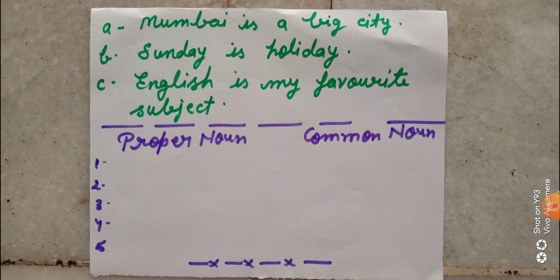One column for proper noun and one column for common noun. After that you will read out the sentences; the proper nouns go in the proper nouns column and the common nouns go in the common nouns column. The sentences are: A — Mumbai is a big city. B — Sunday is a holiday. C — English is my favourite subject. Yahan par sirf teen sentences hain; in teen sentences mein se aapko proper noun aur common noun find out karne hain.